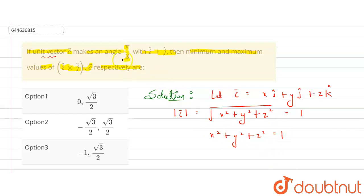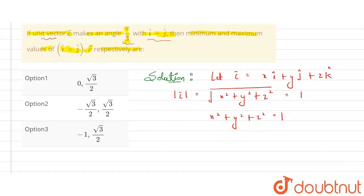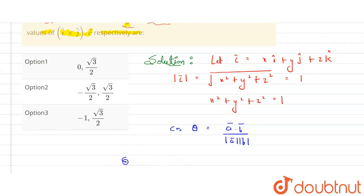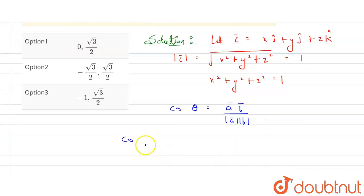One more condition is given: c makes an angle π/3 with î + ĵ. We know that cos θ between two vectors is given by the dot product of both vectors divided by the product of their magnitudes. So cos(π/3) equals the dot product divided by the product of magnitudes.